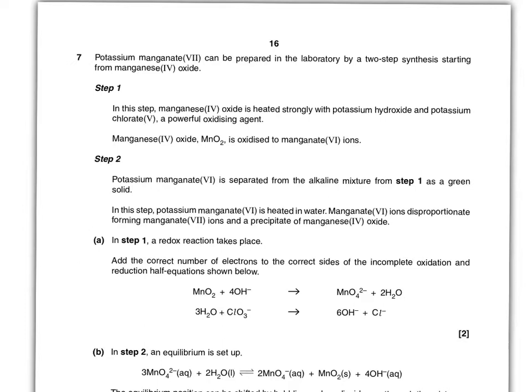So if you look at part A, it says in step 1 a redox reaction takes place, add the correct number of electrons to the correct sides of the incomplete oxidation and reduction half equations below. This question can appear quite intimidating at first because it seems quite tough to figure out what to do. But the key is to remember half equations show electrons.